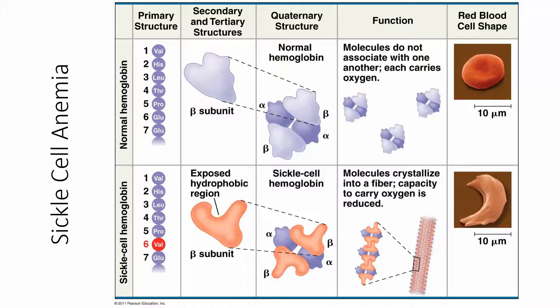Let's look at a super famous example of a mutation — sickle cell anemia. This is an example of a single nucleotide mutation leading to a single amino acid change in a protein that has a huge impact on an entire person's life. Sickle cell anemia is a disease caused by a mutation in the hemoglobin protein. Hemoglobin is a reddish molecule found in high concentrations in red blood cells, and it is the actual protein that carries oxygen around inside the blood.